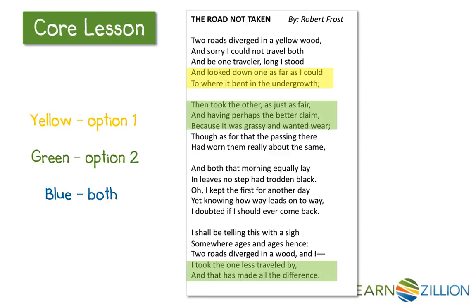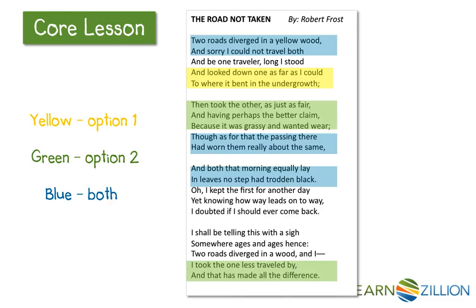Now that we've found all of the differences between the two roads, let's also go back and highlight the similarities in blue. We're looking for any lines that compare both roads. Let's highlight lines one to two: 'Two roads diverged in a yellow wood and sorry I could not travel both.' When looking for similarities, let's also highlight lines nine to ten: 'Though as for that, the passing there had worn them really about the same.' Finally, lines 11 to 12 also compare the two roads: 'And both that morning equally lay and leaves no step had trodden black.' These lines should all be in blue, to distinguish them from the differences we found in yellow and green.